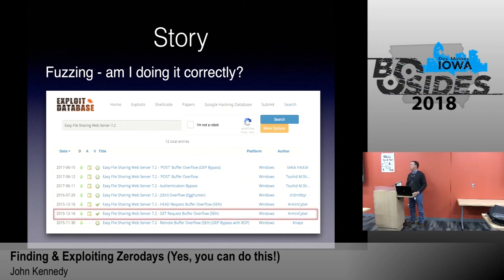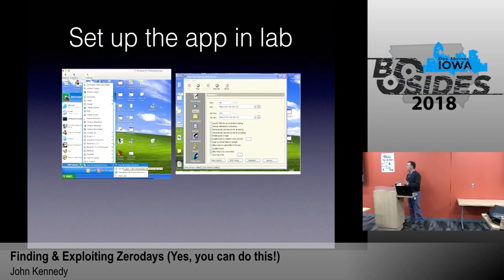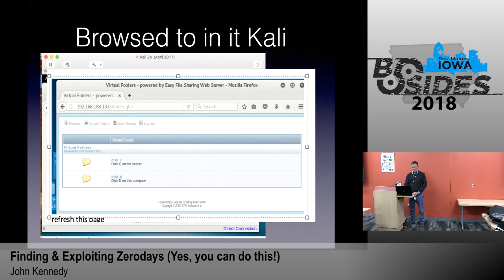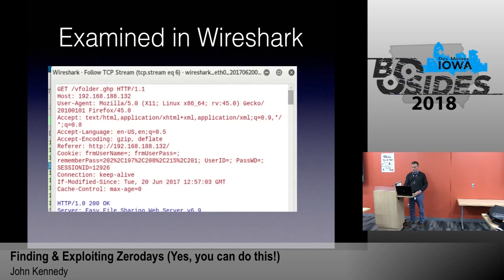I liked it because it was a web-based file sharing application available for free with the actual vulnerable application available for download. So I downloaded the app and set up my target VM. XP was available, so I set up the app in my Windows XP machine, got it working properly, and then browsed to it in my Kali. Chose a guest session, chose one of those links, and then I examined it in Wireshark. I chose that GET request, and the GET request looked like this.